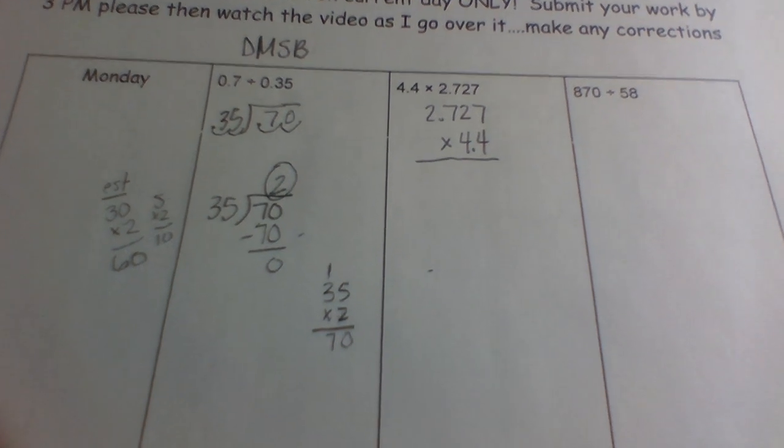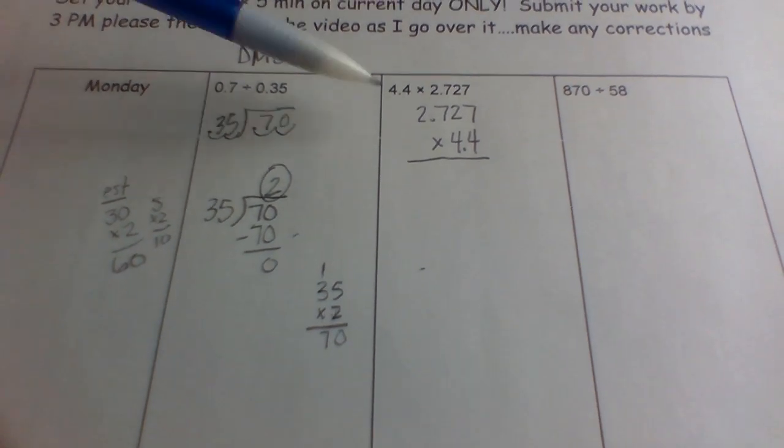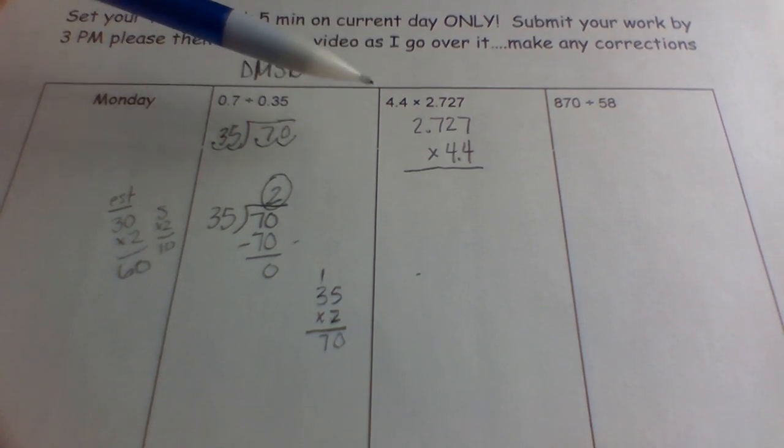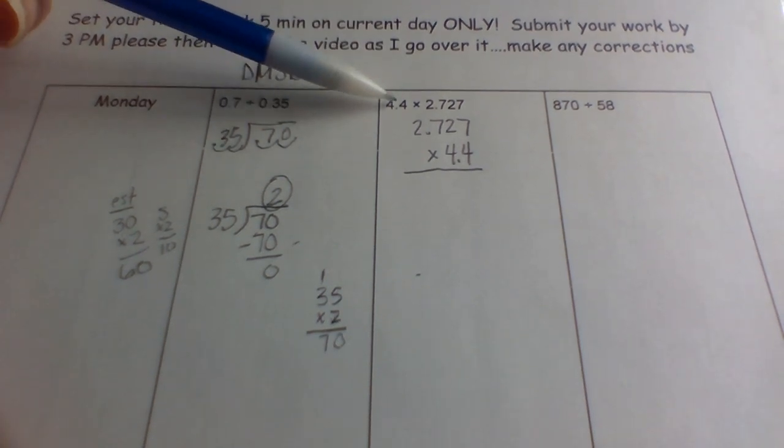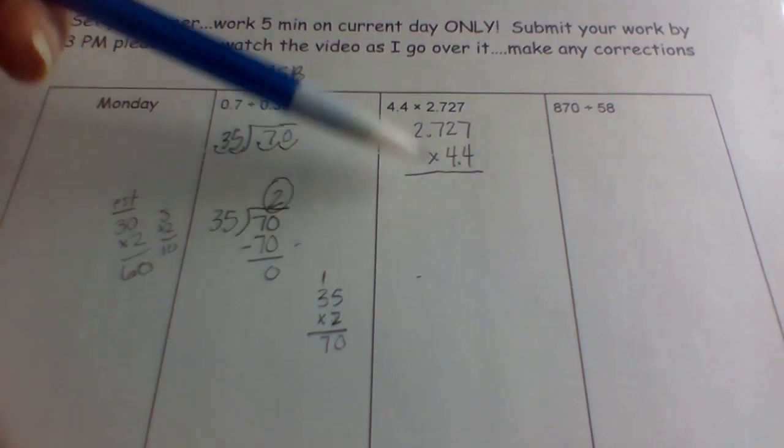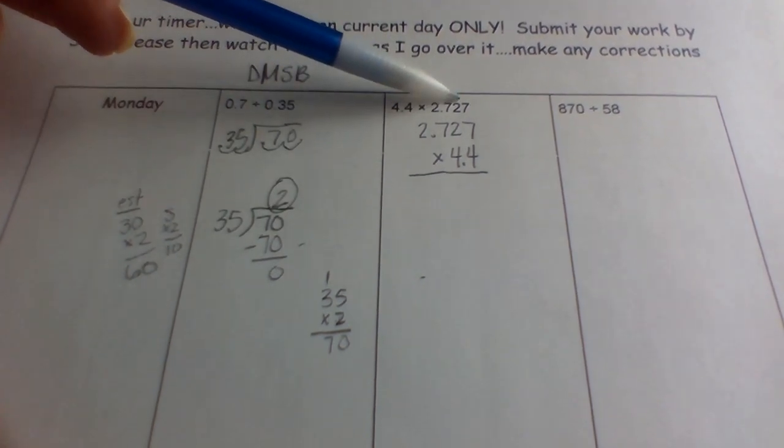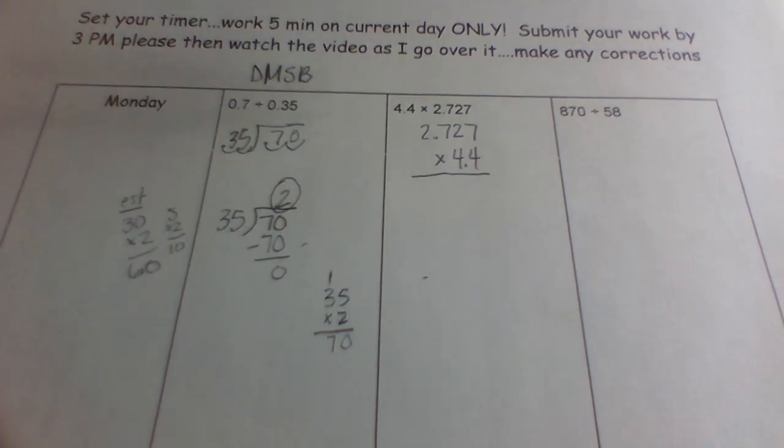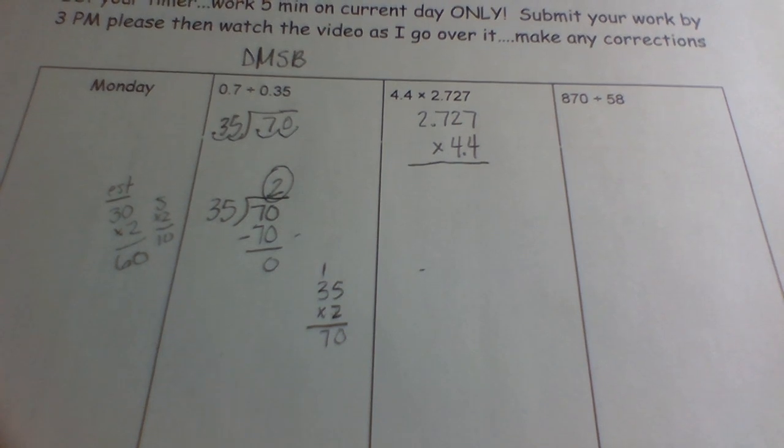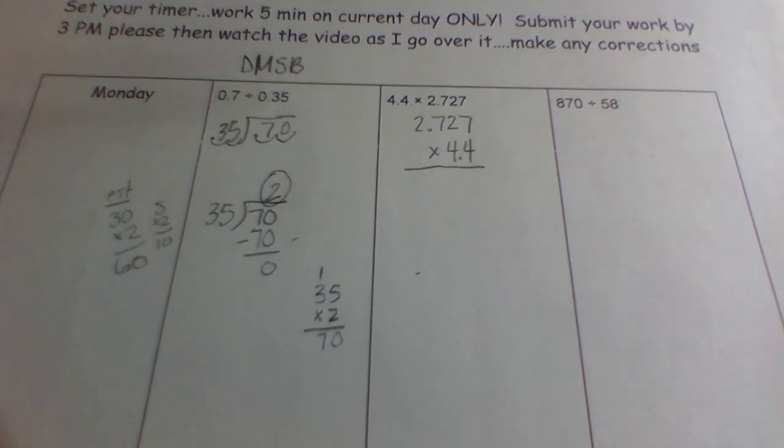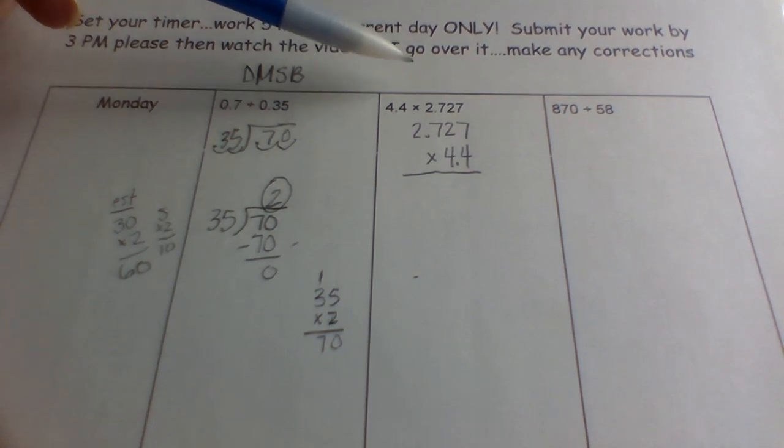So moving on to our multiplication. If you notice, I rewrote my problem. And notice, remember I've told you this before, I'm kind of lazy. So I'd rather do less work. So seeing that there's only two numbers here means I'll only have two rows here. When there are four numbers here, I would have to have four numbers if this was on the bottom. So remember, we use the commutative, which means we can go in any order. So before we do this, we're just going to do a quick estimate, right?